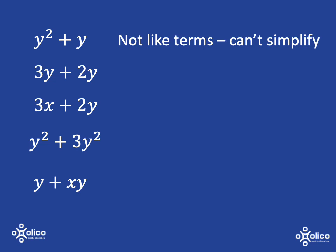But 3Y plus 2Y, you can, because you've got 3 yellow lengths plus 2 yellow lengths in total. It's going to be a length that is 5 yellow lengths long.